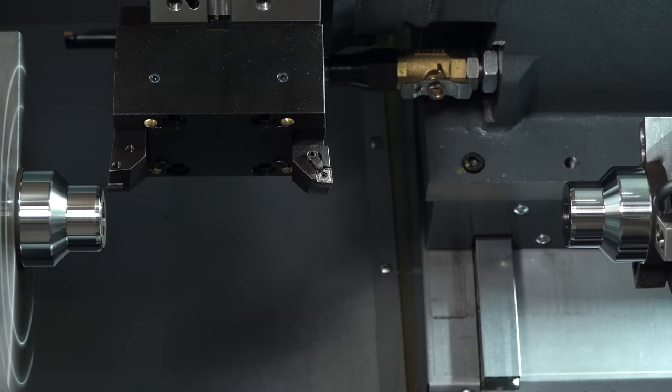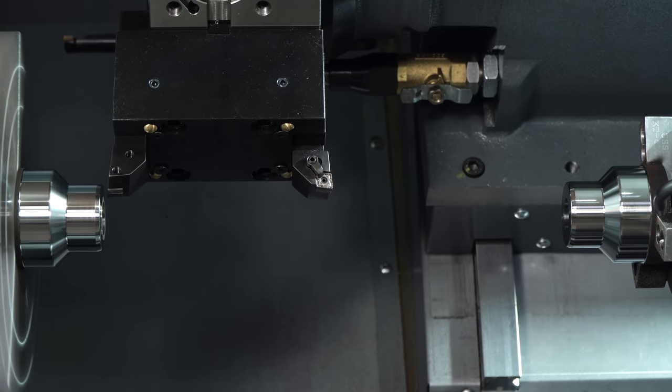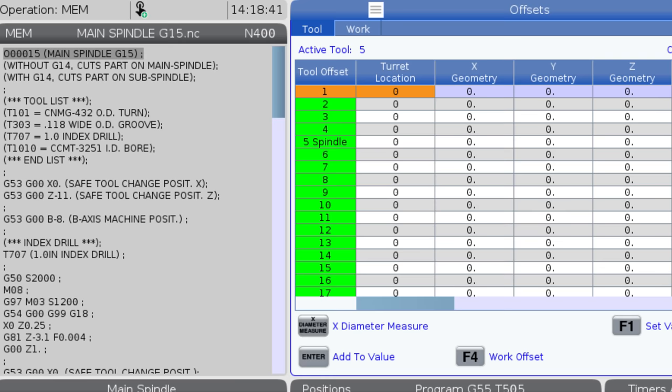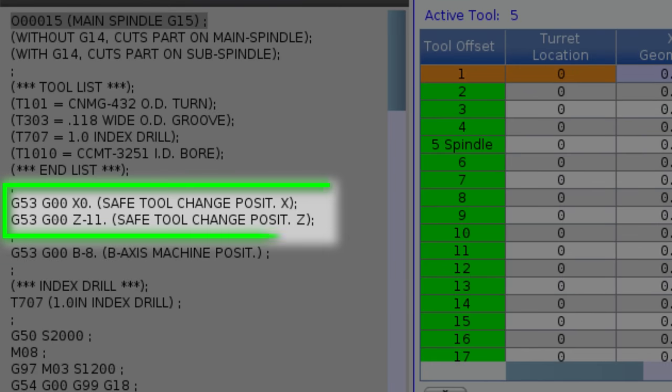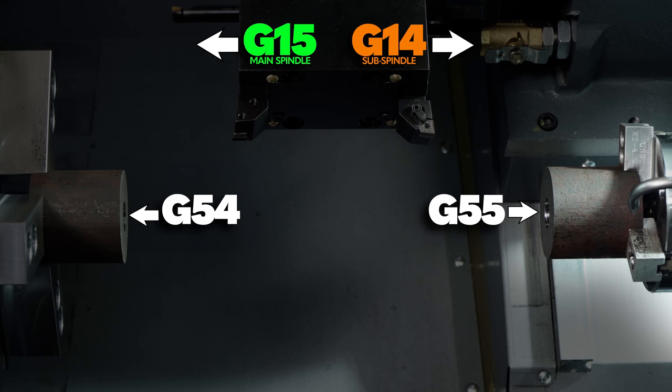For this demonstration, we're running the exact same part on both our main spindle and our sub-spindle. But before we can set our tools, there are a few things we have to agree on. We've got some subjective decisions that have to be made, just like every job. And we've decided that on this part, we're going to do a tool change at G53, G0, X0, Z minus 11 inches. And we also have to decide what work offsets that we're going to use. And this is helpful to know before we start setting up our tools. We're going to use G54 for all of our main spindle G15 machining. And we're going to use G55 for all of our G14 sub-spindle machining.